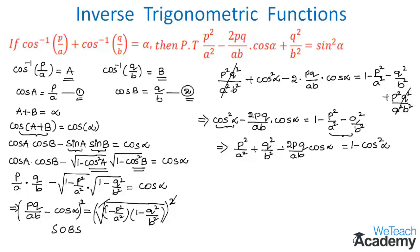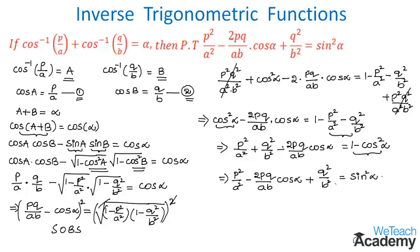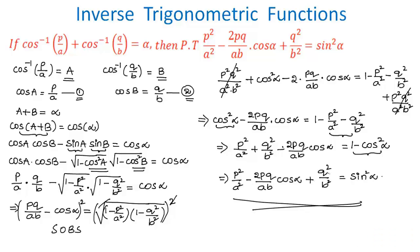Rewriting the terms in the required order: P²/A² − 2PQ/AB · cos α + Q²/B² = 1 − cos²α, which equals sin²α by the trigonometric identity. Hence we have proved that P²/A² − 2PQ/AB · cos α + Q²/B² = sin²α.